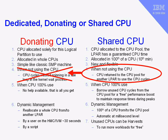Donating is much like a dedicated CPU partition, except in the case when we're not using the CPUs that have been allocated to us — in that case it behaves like a shared CPU logical partition and it can loan those CPUs to the shared CPU pool for another logical partition to use. The donating CPU logical partition has first call on the CPUs it's loaned to other partitions — so if it needs them, it gets those CPUs back in preference to other logical partitions. Otherwise it's like a dedicated partition.